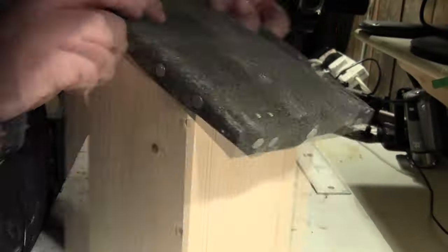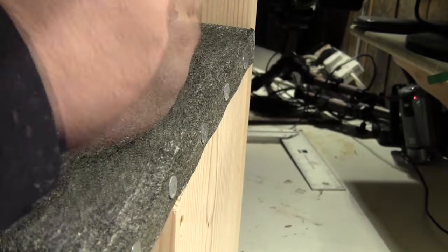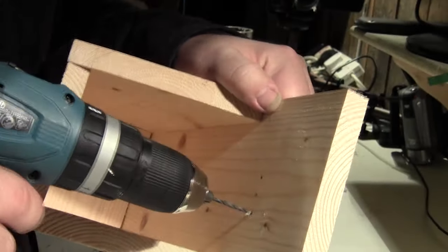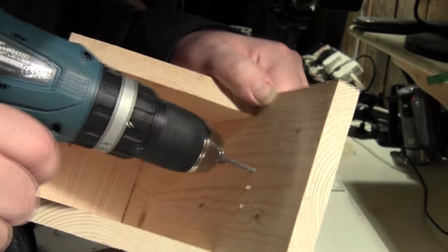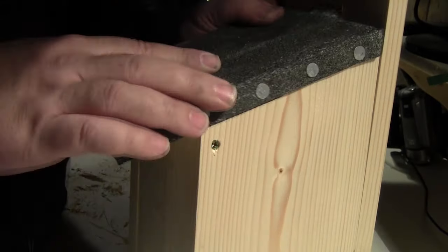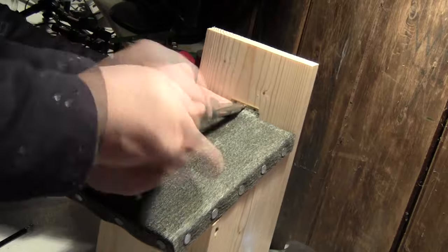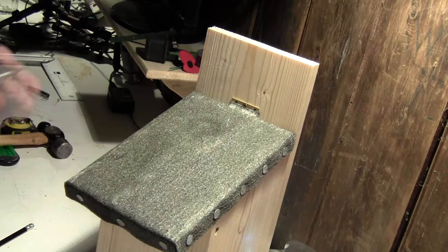Now I do a dry fit of the roof to make sure that it fits in place, mark out where the hinge screws will go, and again pre-drill them using the two and a half millimeter drill bit. I then use the same screws that I used to fix the hinge to the roof and fix it to the back plate.